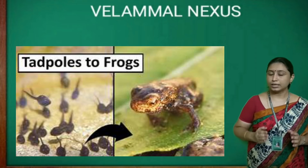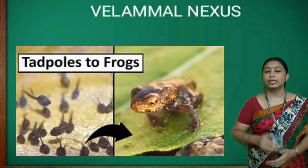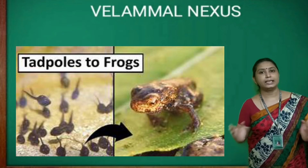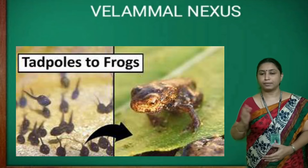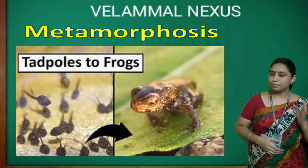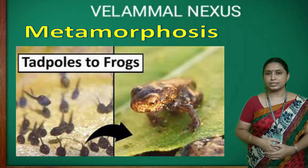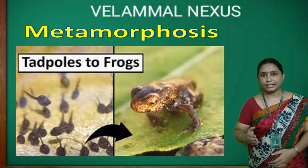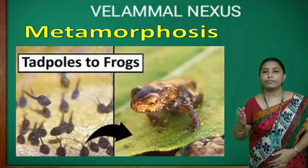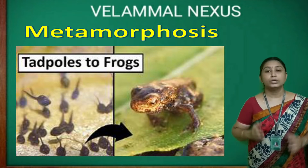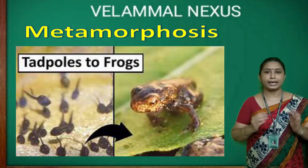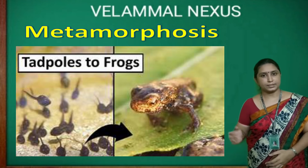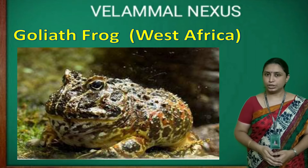Children, in the frog's life cycle, the tadpole looks entirely different from an adult frog. This marked change in appearance, character, or functioning of an animal during its life cycle is called metamorphosis.